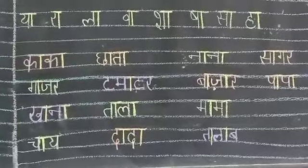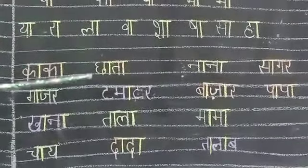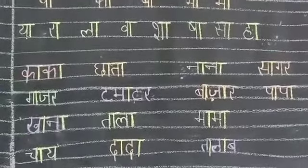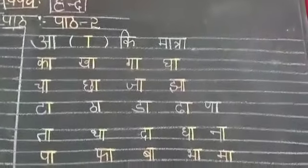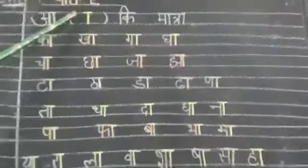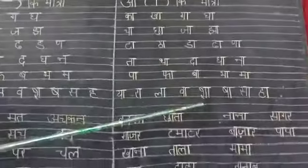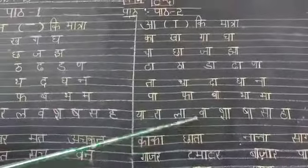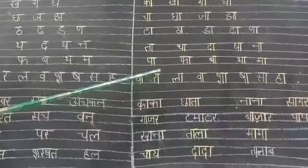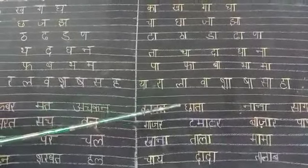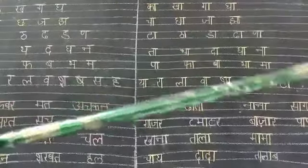Okay children, you have to write this in classwork as part 2. After part 1, you have to write part 2 - Aa-ki maatra. Write in the same way and highlight the maatras with the color pencil. Use the pink color pencil to highlight the maatras. Now we will go to the textbook.